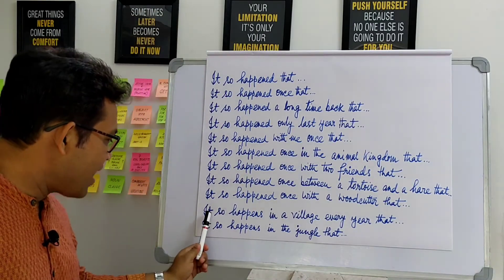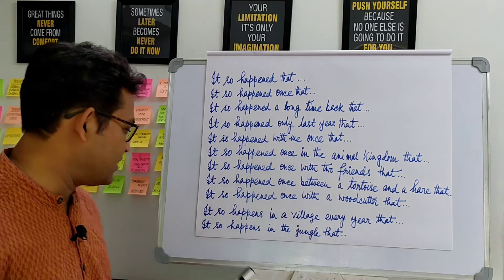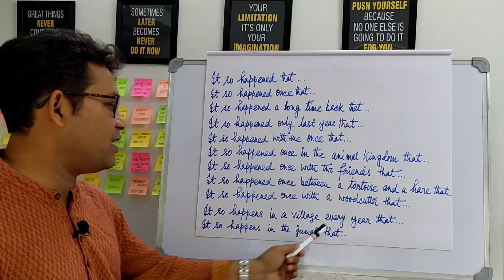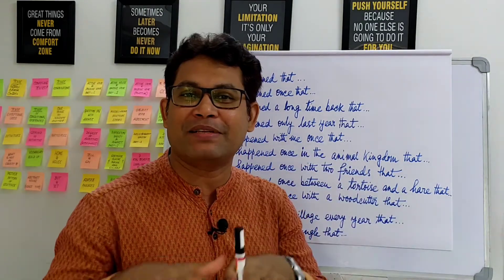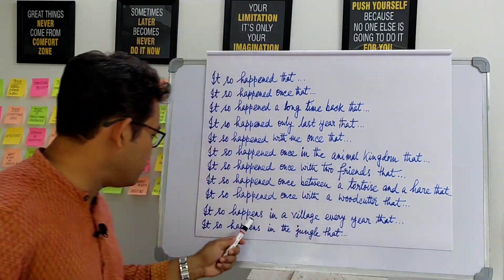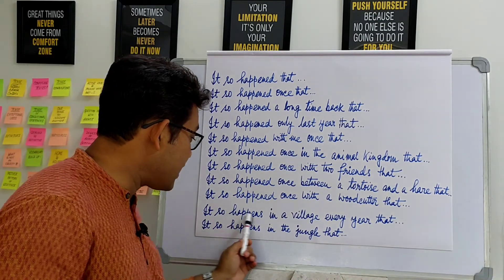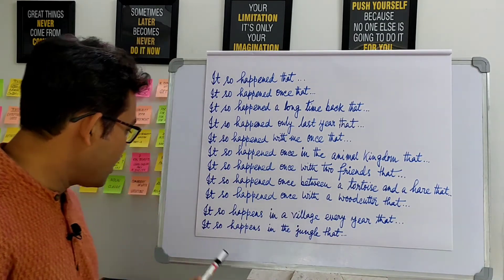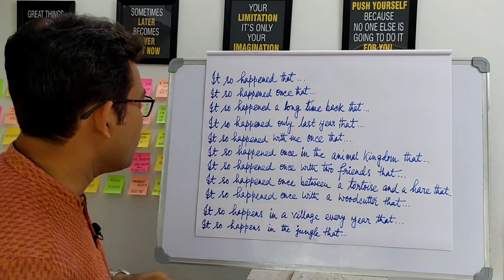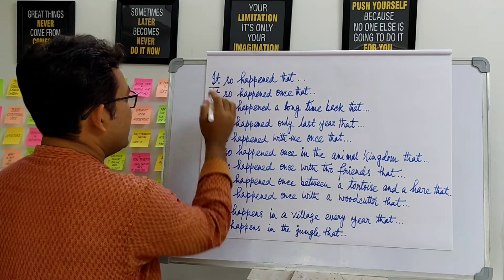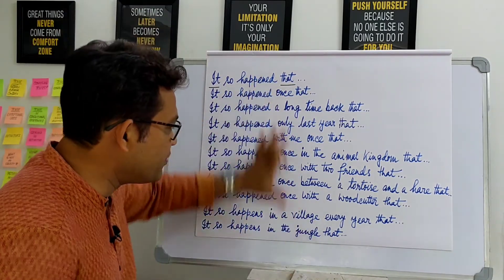We can also use this phrase in the present tense, like 'It so happens in a village every year that...' — sometimes we might want to narrate in the present tense, and we can use this phrase for that. We cannot use 'once upon a time' in this situation. Similarly, 'It so happens in the jungle that...' Notice that 'it' and 'that' are the fixed beginning and end of the phrase, and in between we can make changes to suit our purposes.